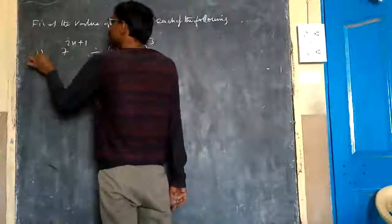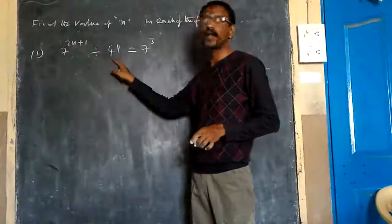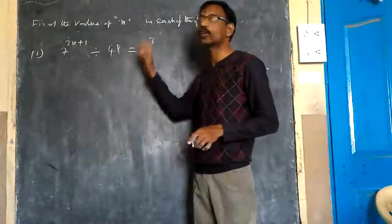So here, see here, 7 to the power of 2n plus 1 divided by 49 equals 7 to the power of 4.